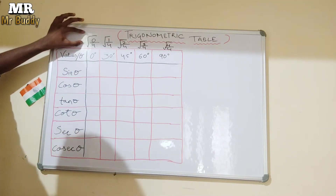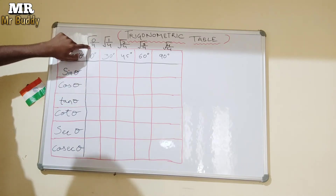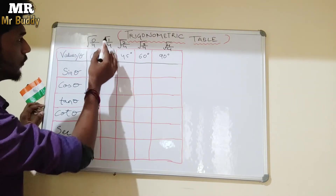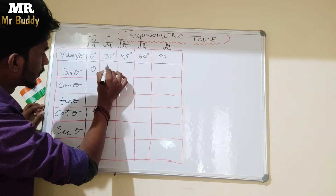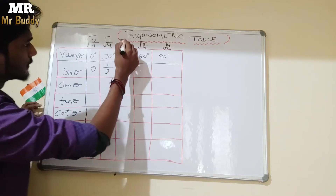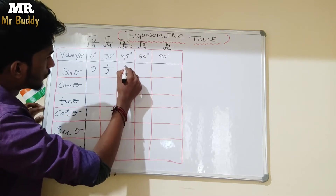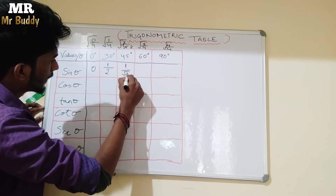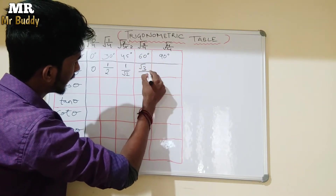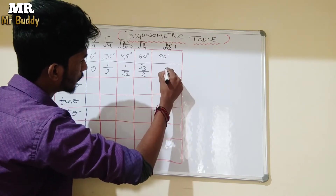We call these the sinθ values. So, 0 divided by 4 is 0, and the square root of 0 is 0. Then 1 divided by 4 — root of 1 is 1, and root of 2 as it is for 2 by 4. Then 3 by 4 gives root 3 as it is. And 4 by 4 becomes 1, and root of 1 is 1.